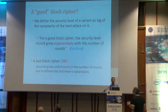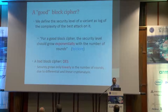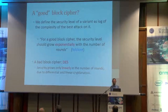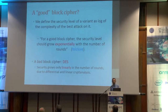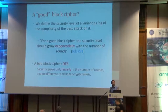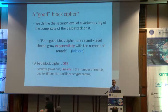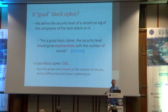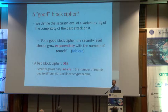What is a good block cipher? We define the security level of some reduced round variant as the log of the complexity of the best attack on it — so if the attack is 2^64, then the security level is 64. Some folklore says, really informally, that for a good block cipher, the security level should grow exponentially with the number of rounds. The motivation: a bad block cipher is DES — security goes only linearly with the number of rounds, due to differential and linear cryptanalysis.